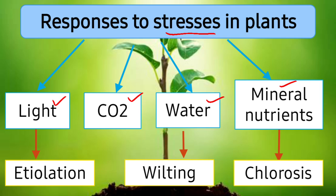If plants are not able to overcome the deficiency of these essential elements, their symptoms become visible and different disorders appear. For example, if there is a deficiency of light — if a plant is grown without light — we see a condition called etiolation. Etiolation is a condition in which, when plants are not provided with enough light for their growth, they show a rapid increase in their size, and also they lack chlorophyll — they are unable to form chlorophyll.